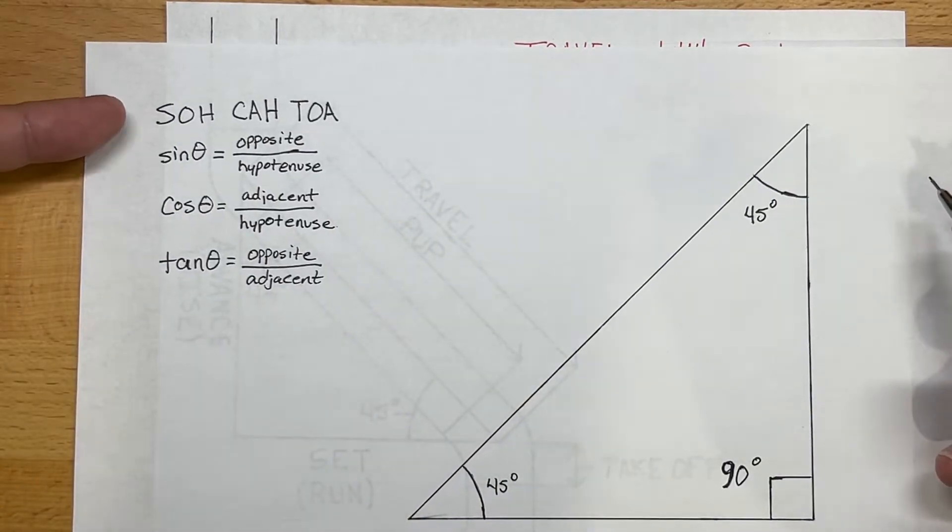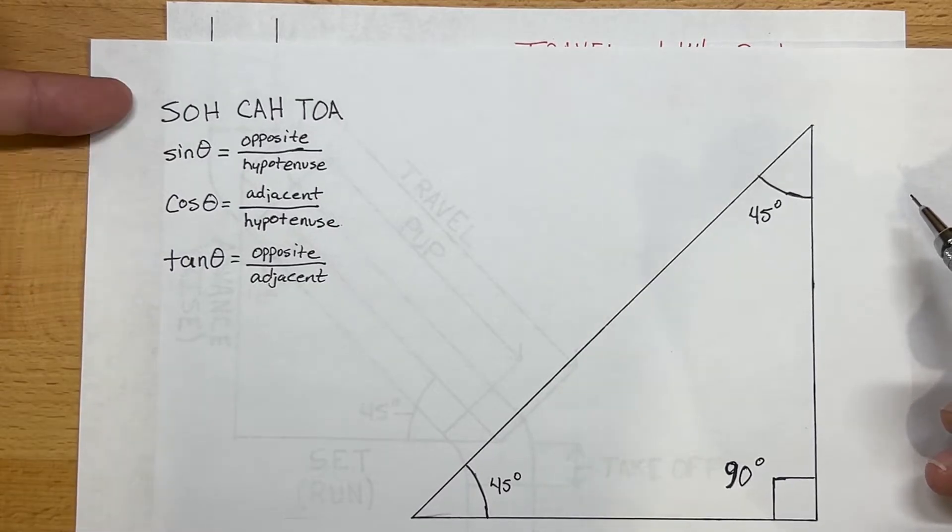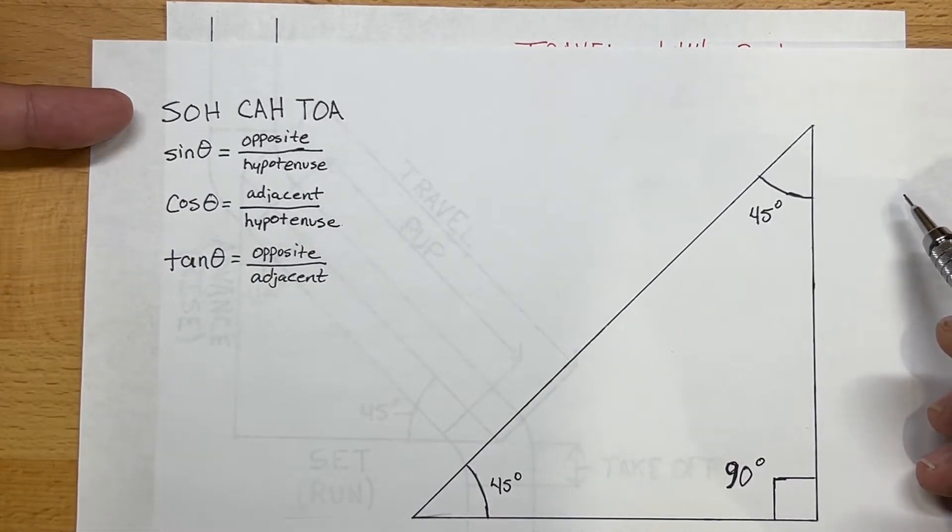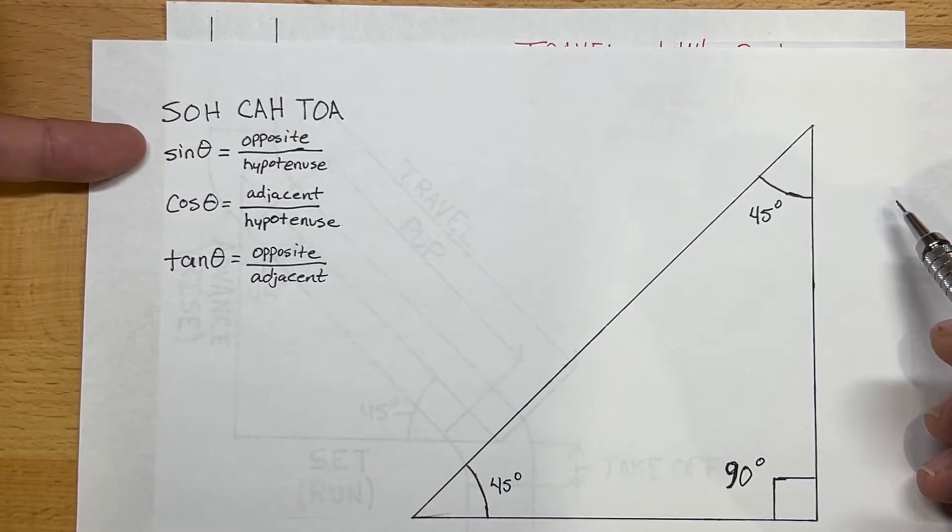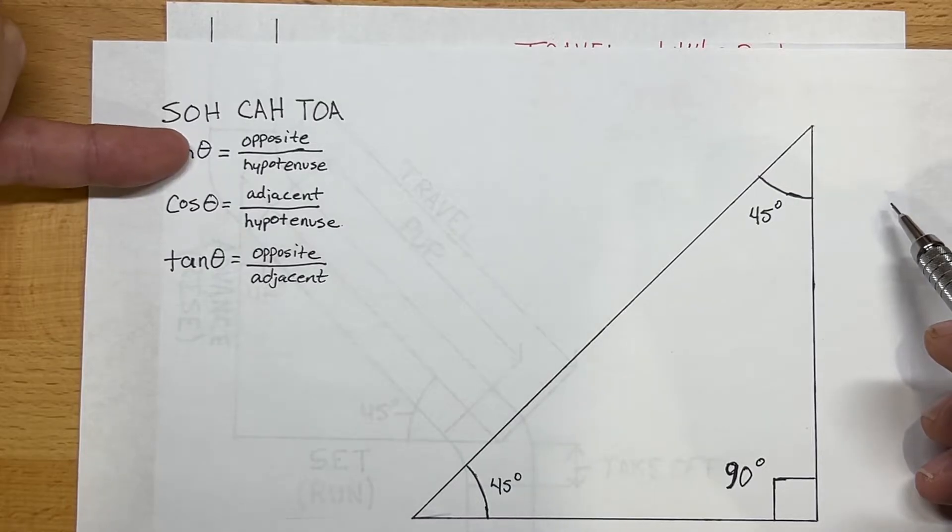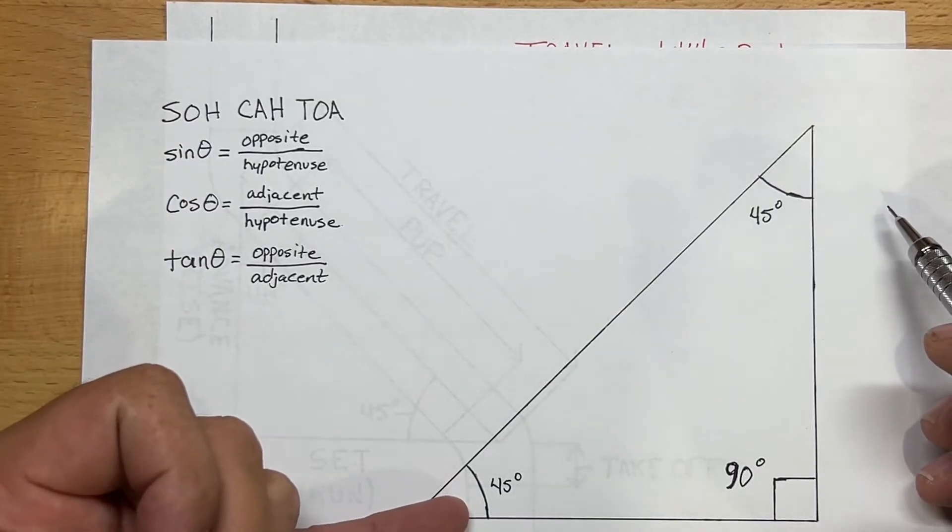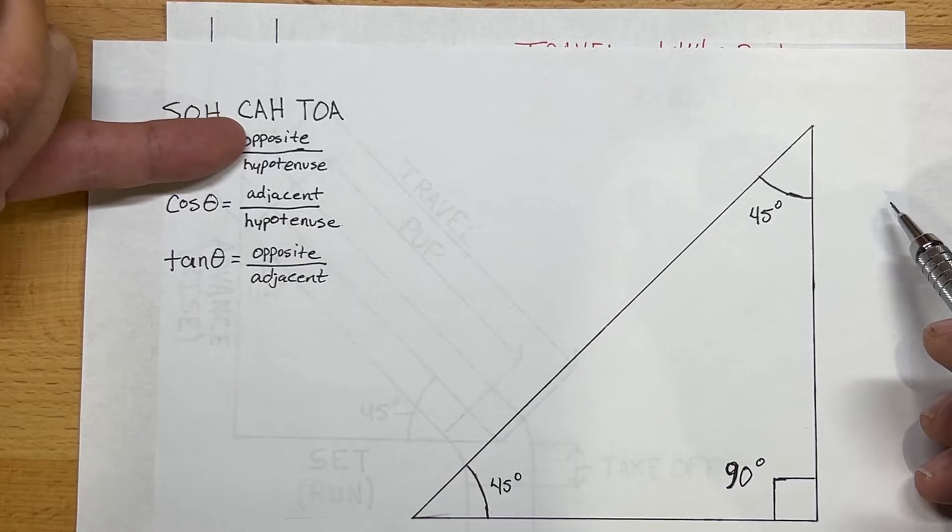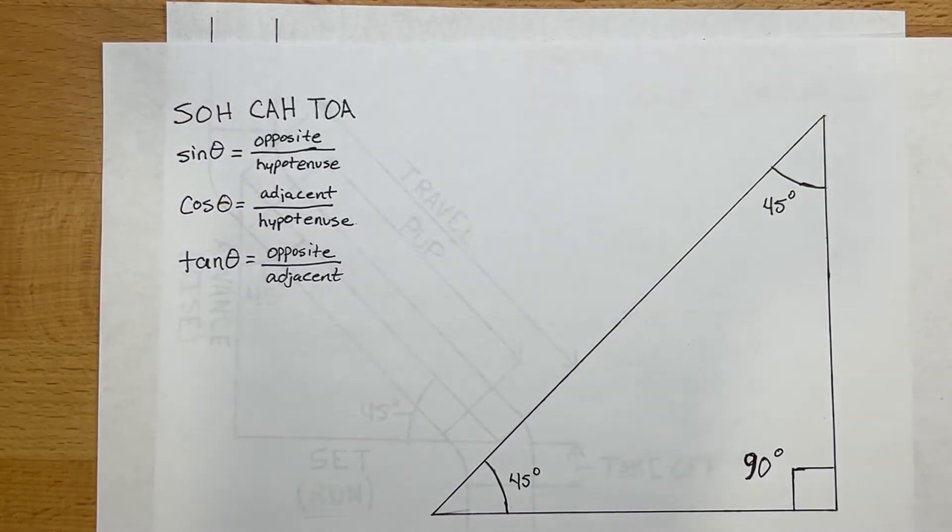So the way this works is it uses trigonometry functions: sine, cosine, and tangent. The way you remember those is phonetically how to do the formulas. That is SOH CAH TOA. So SOH CAH TOA means that sine of the angle, and in our case that's a 45-degree angle, will be equal to the opposite over the hypotenuse. So let's just do that real quick and I'll show you what that means.